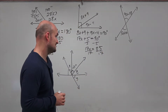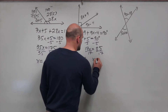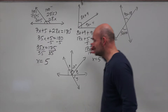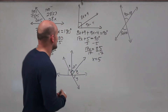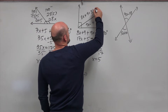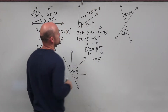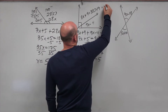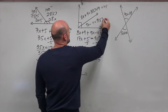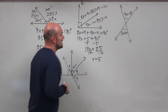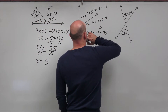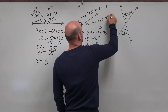x equals 5. Now I'll plug 5 back in. For the first angle: 8 times 5 plus 9 — 8 times 5 is 40, plus 9 is 49. For the second angle: 9 times 5 minus 4 — 9 times 5 is 45, minus 4 is 41.